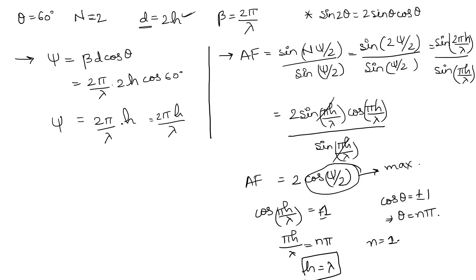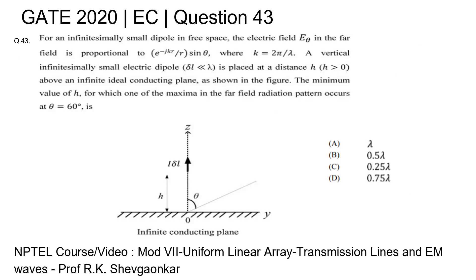So h = λ is the minimum value of h that makes the radiation pattern maximum at the far-field point P due to the dipole. Option A is the correct option. For a complete understanding, refer to Module 7 on uniform linear arrays from the lecture series 'Transmission Lines and EM Waves' by Professor R.K. Shevgaunkar.